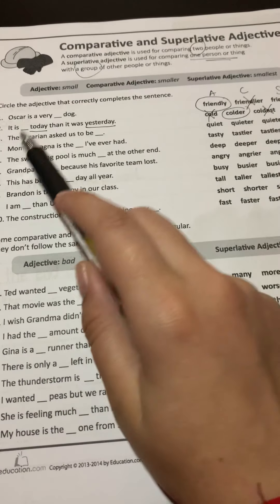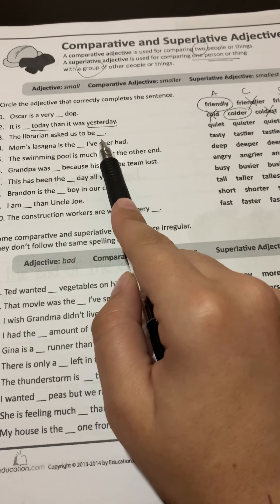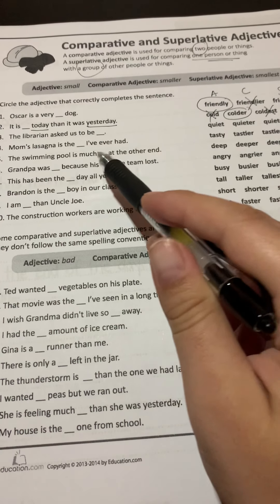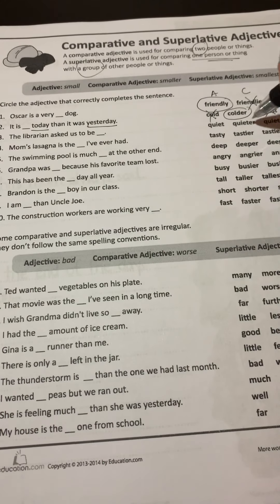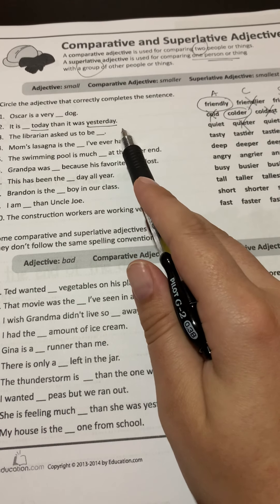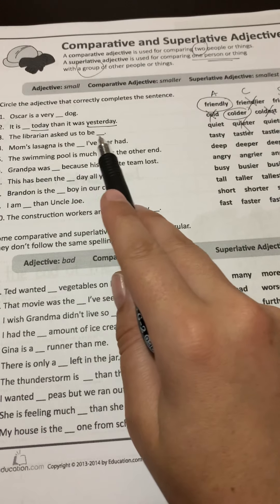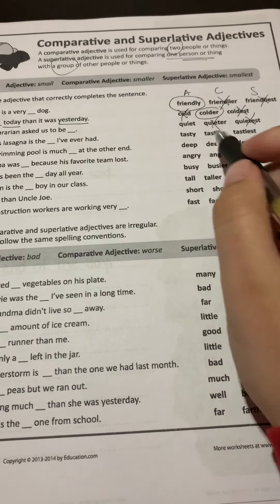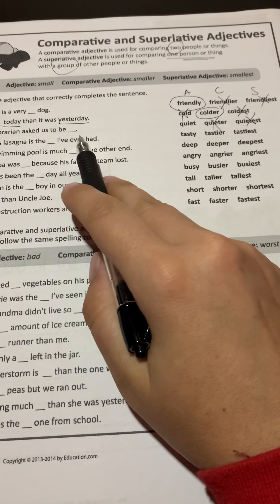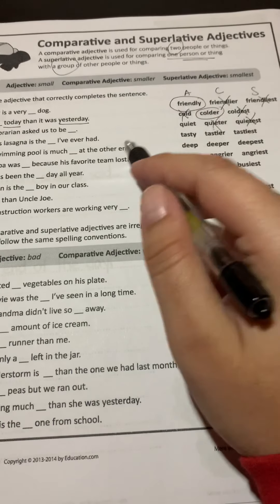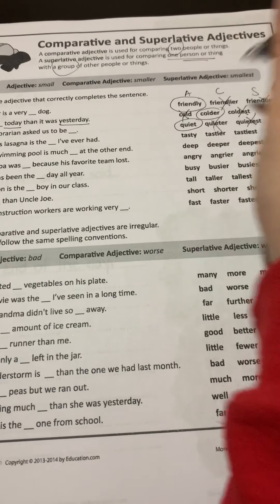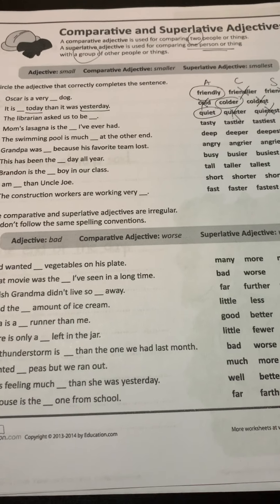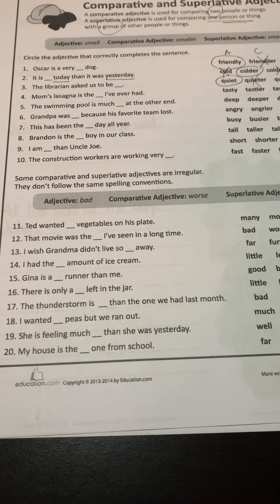One more together: 'The librarian asked us to be ___' — quiet, quieter, or quietest. Are we comparing two people or things? No. Are we comparing to a group? No — 'the librarian asked us to be quietest' sounds weird. We're just describing what she asked us to be — quiet. See if you can figure out the rest.